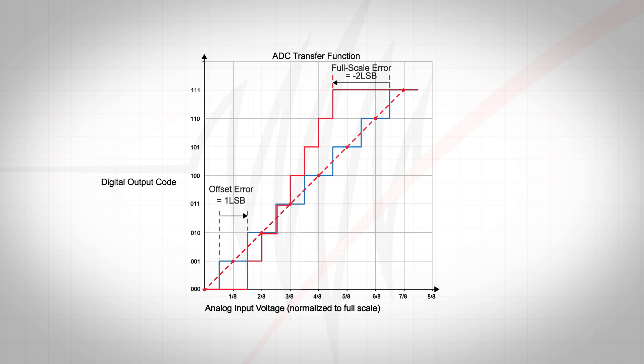Related is the full-scale error, which is the difference between the ideal last transition voltage and the actual transition voltage. In this figure, the ADC has reached its highest code value before its maximum input voltage.